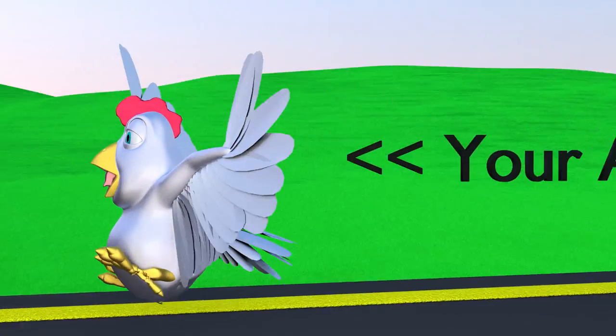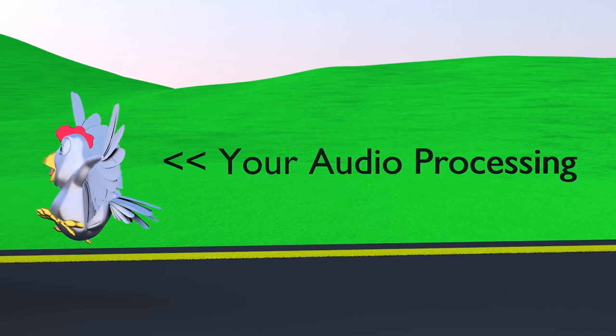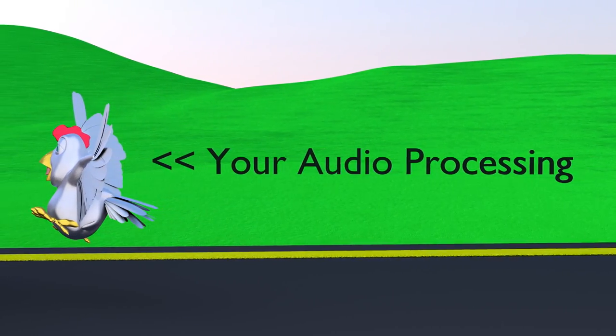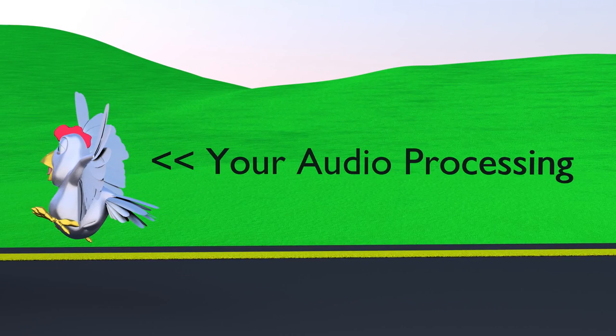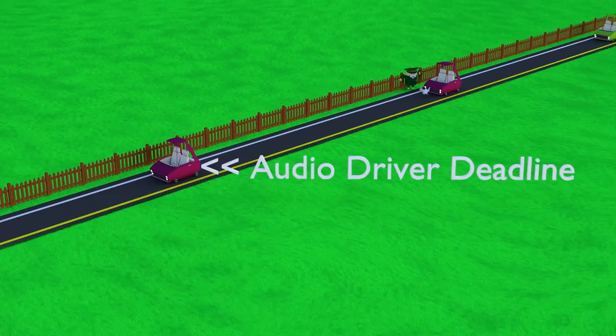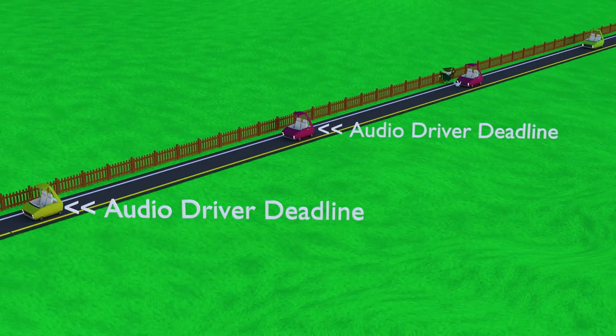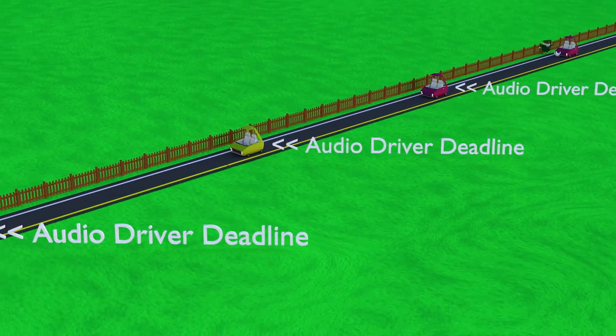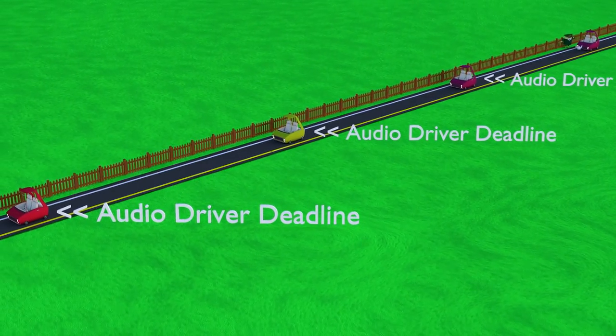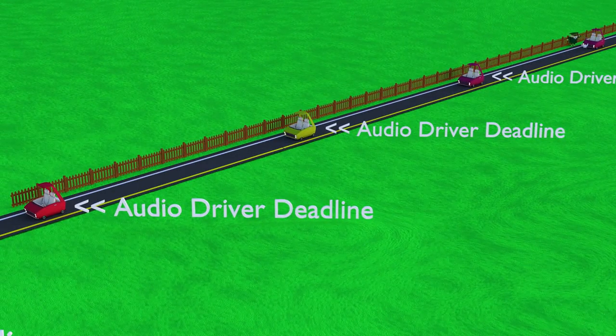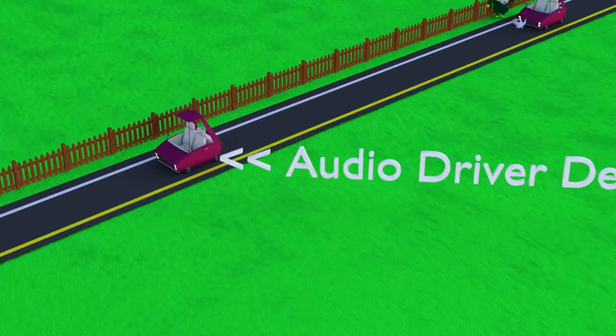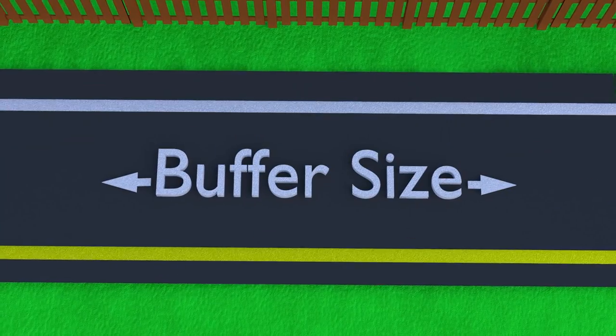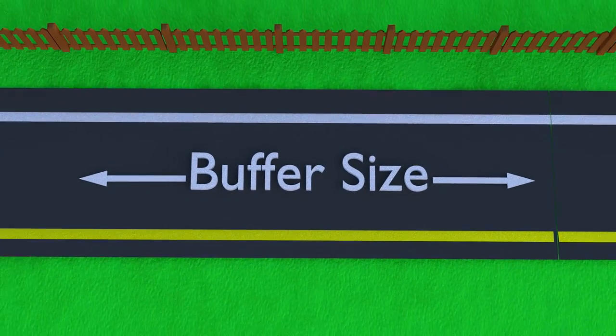The chicken in this analogy is the code that processes audio data, both in your application and in the Android audio framework. The overall traffic flow represents the audio hardware, which consumes data at a constant rate, no matter what. Each car is a deadline. Feed me data now. In Android, audio samples are grouped together into fixed size buffers. The space between the cars is the buffer size.